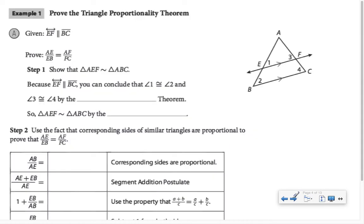Let's prove that. I am given that EF is parallel to BC, so I'm going to show that triangle AEF is similar to triangle ABC. I know that angles 1 and 2 are congruent, and angles 3 and 4 are congruent, by the corresponding angles theorem. So triangle AEF is similar to triangle ABC by the angle-angle similarity.